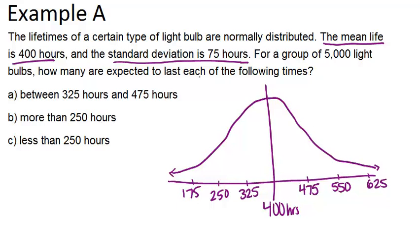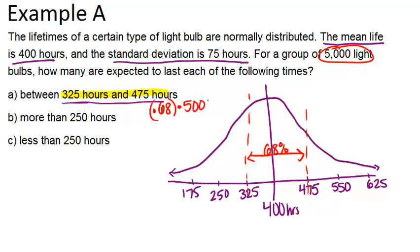The first question is, how many are expected to last between 325 and 475? That would be all the bulbs that are within one standard deviation of the mean. From the empirical rule, we know that 68% of the data is within one standard deviation. So that means 68% of our 5,000 light bulbs will last between 325 and 475. So to figure this out, I'm going to do 0.68, 68% times 5,000. And my answer is 3,400. So I would expect about 3,400 light bulbs will last between 325 and 475 hours.